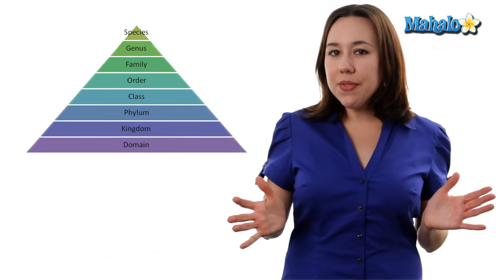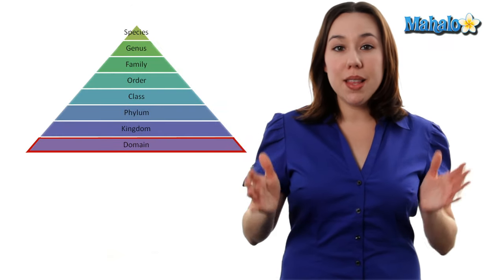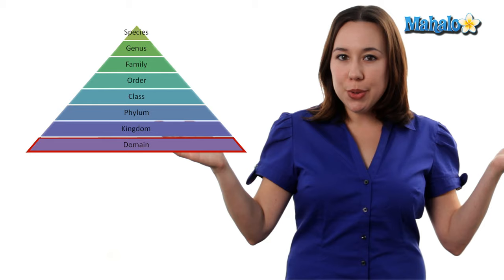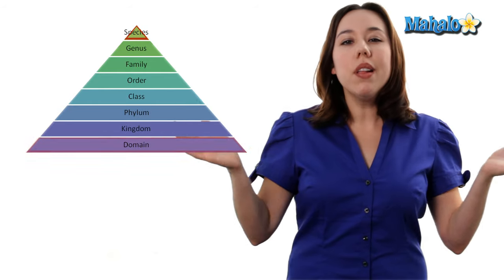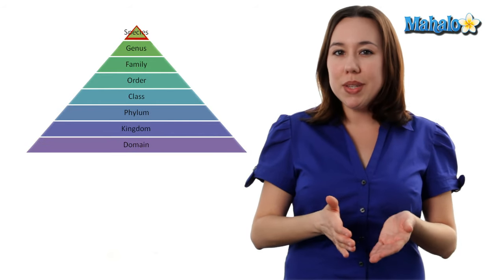So what does all this mean? When classifying organisms, we're going to start at the most inclusive or the biggest group and we're going to whittle our way down to the smallest, or the species.